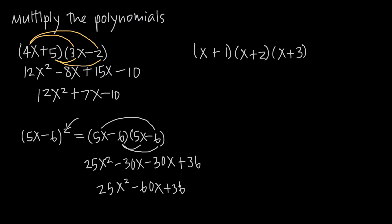Now we're going to get a little more advanced. We can multiply together polynomials of any length, and any number of polynomials. In this example, I have three polynomials: x plus 1, x plus 2, and x plus 3. The way we handle that is we just focus on two of them first. We're going to pretend for a second that x plus 3 isn't even there, and just look at x plus 1 times x plus 2.